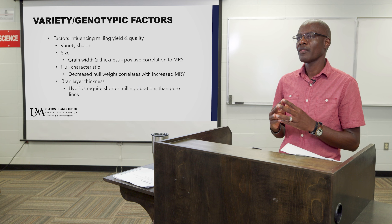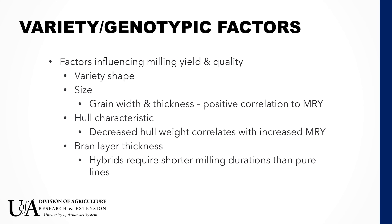Different varieties have different shapes and sizes. Grain width and thickness have been found to be positively correlated with milled rice yields, and this also translates into quality parameters during processing. Hull characteristics matter as well — decreased hull weight correlates with increased milled rice yields. Brown layer thickness is also important; hybrid rice requires shorter milling duration than pure line rice, and different brown layer characteristics produce different quality parameters across cultivars.